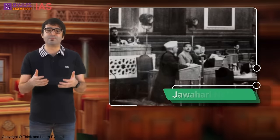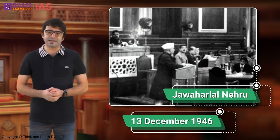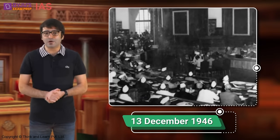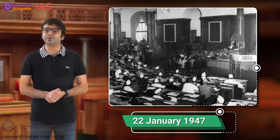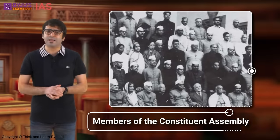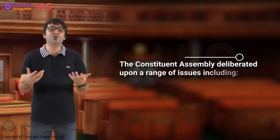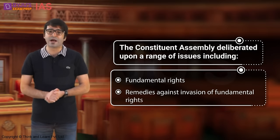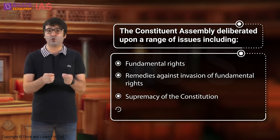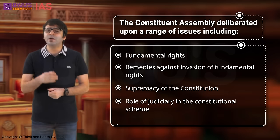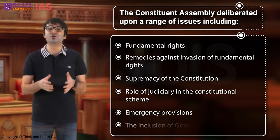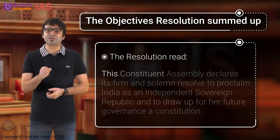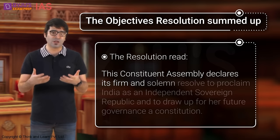The preamble is based on the Objectives Resolution, which was moved by Pandit Nehru on 13 December 1946 and unanimously adopted on 22nd January 1947. The members of the constituent assembly extensively deliberated upon a range of issues including fundamental rights, remedies against invasion of fundamental rights, supremacy of the constitution, role of judiciary in the constitutional scheme, emergency provisions, and the inclusion of God in the preamble.